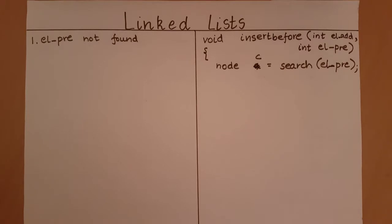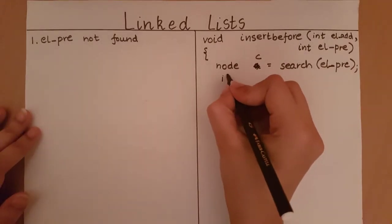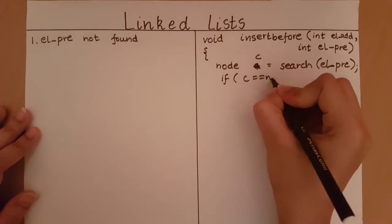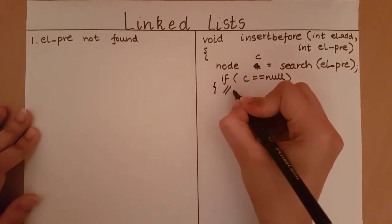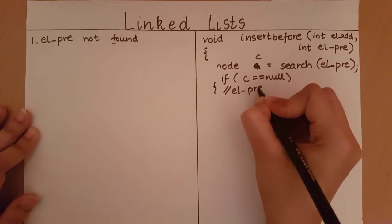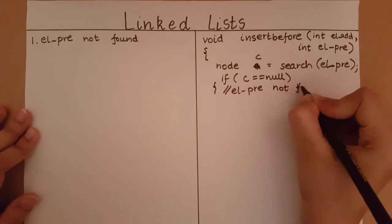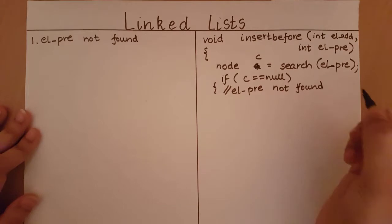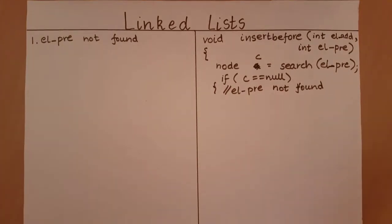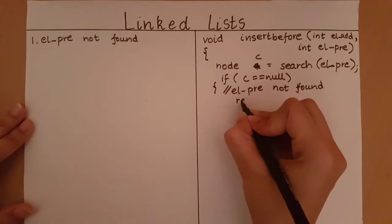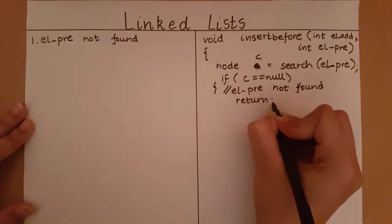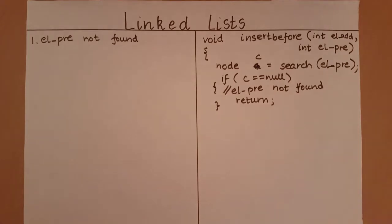Now that I have the result of the search function, I need to check whether this element was actually found. So I am going to check if c is equal to null — this means the pre-existing element was not found. In this case, I don't want to continue with my function, so I am going to say return. If I don't know before which element I need to insert, I return. It's very simple.